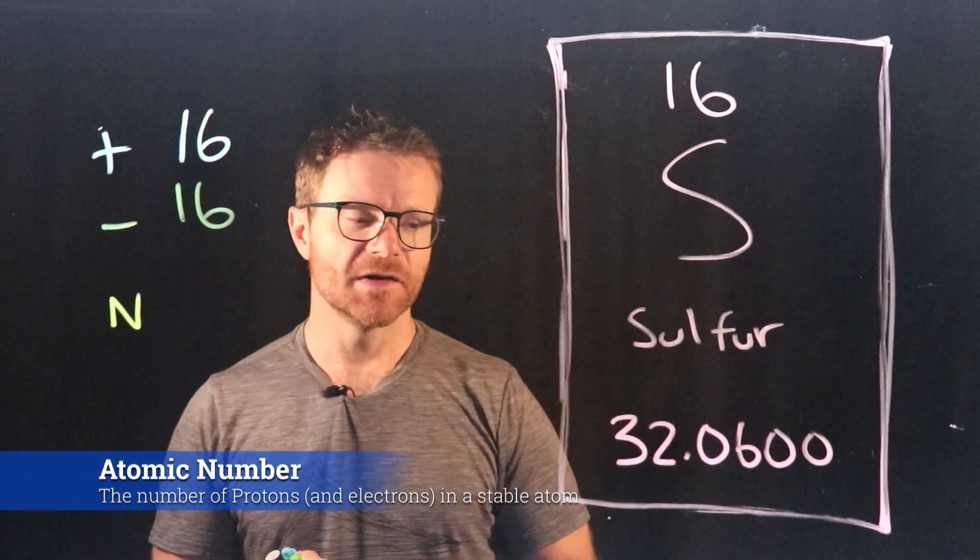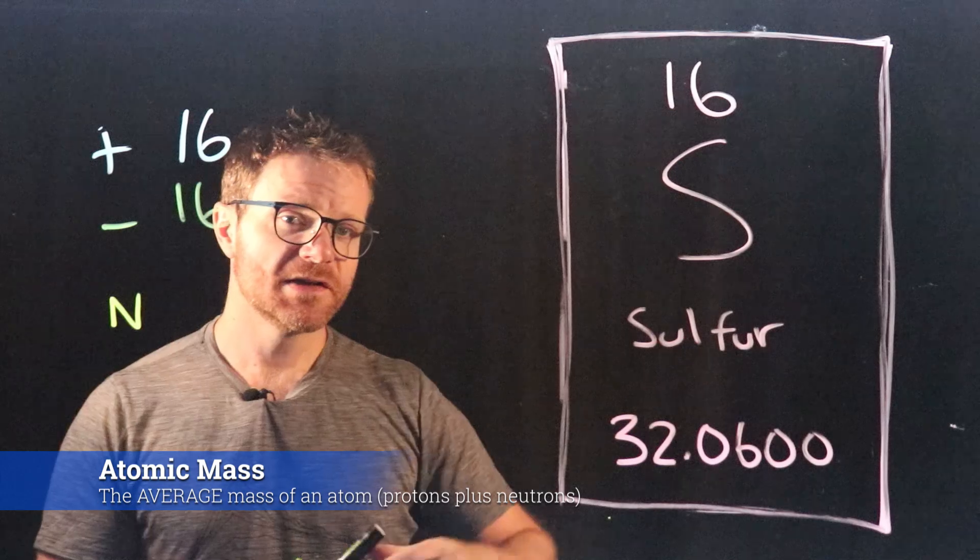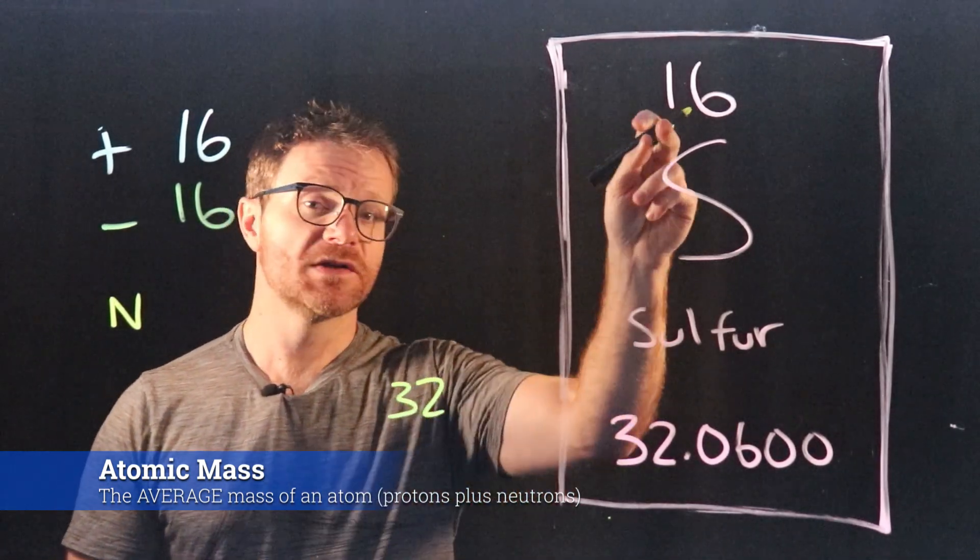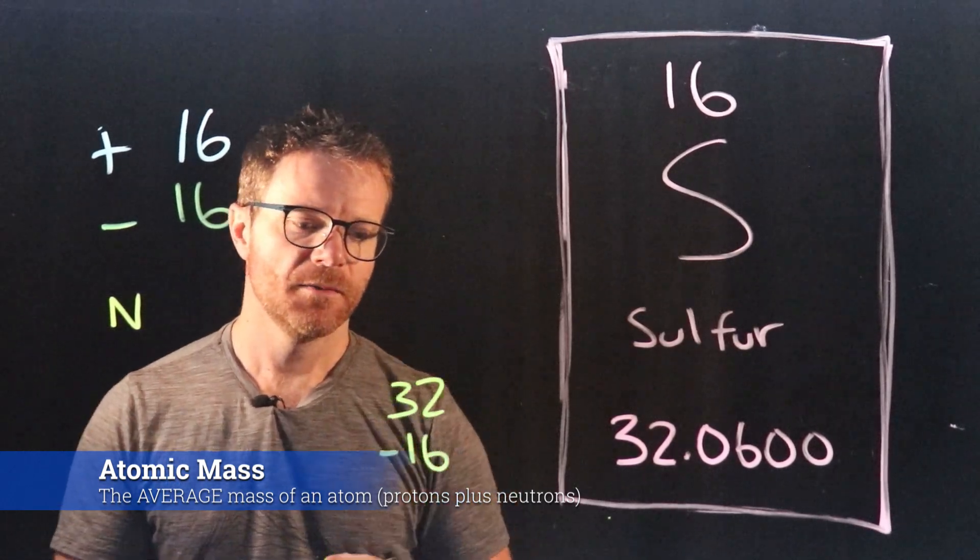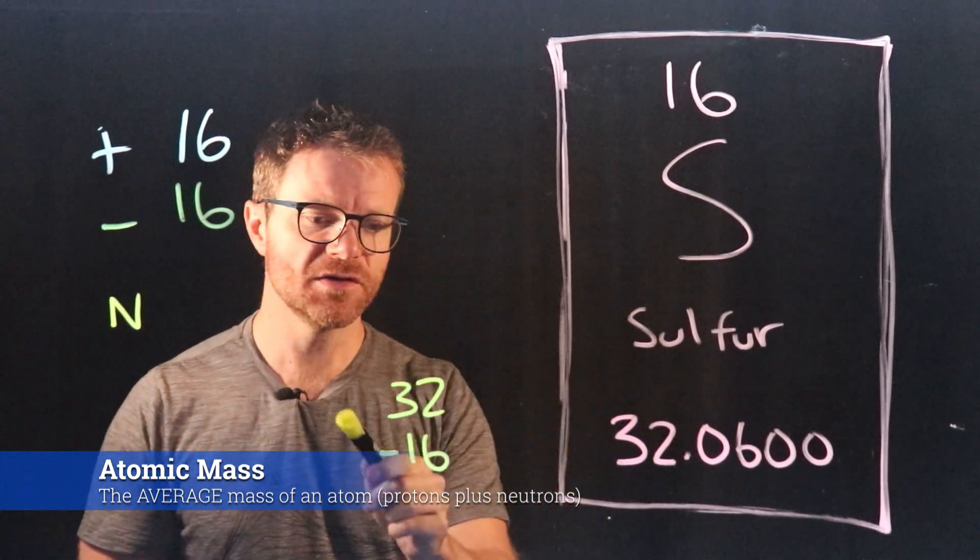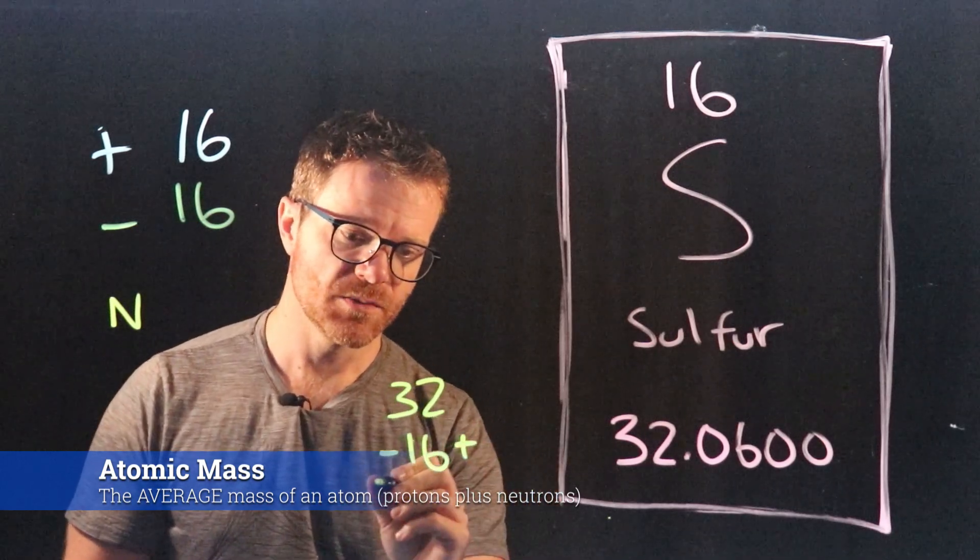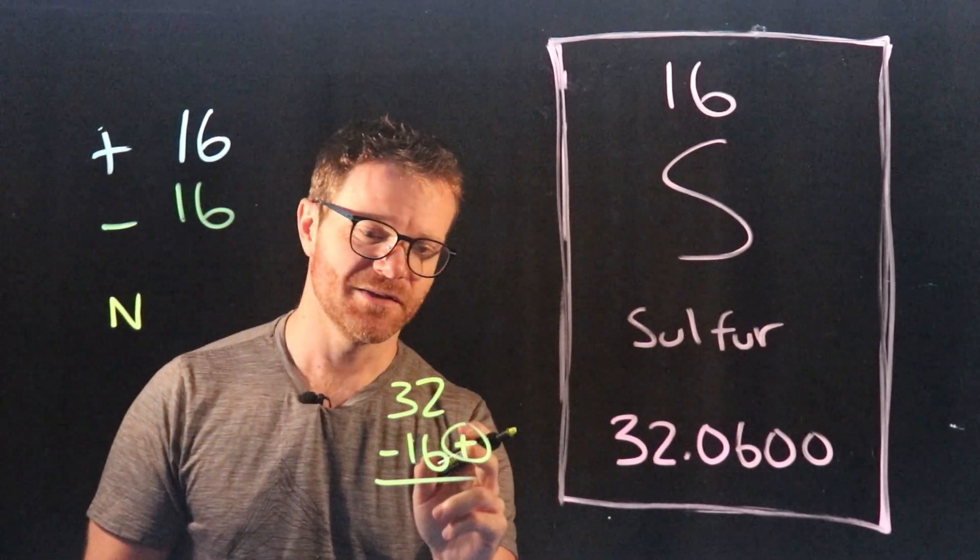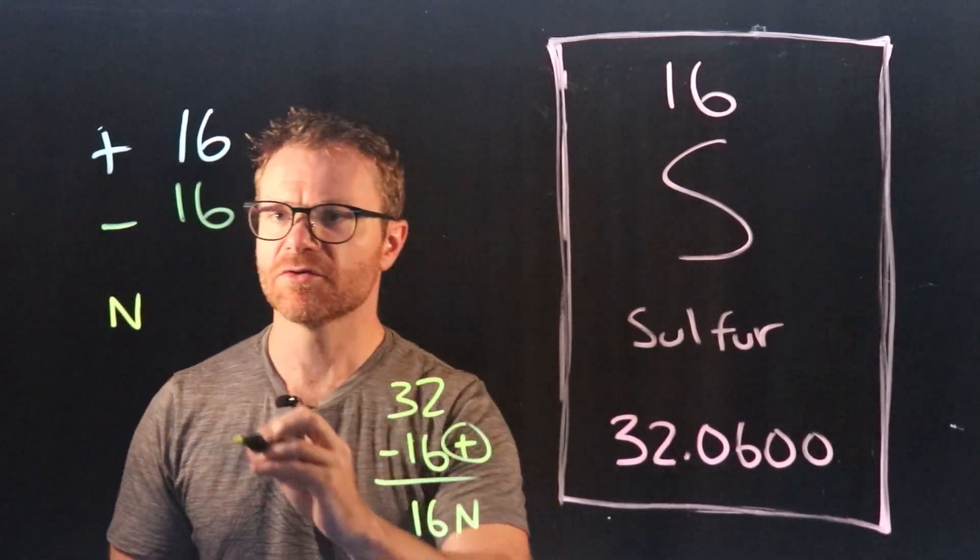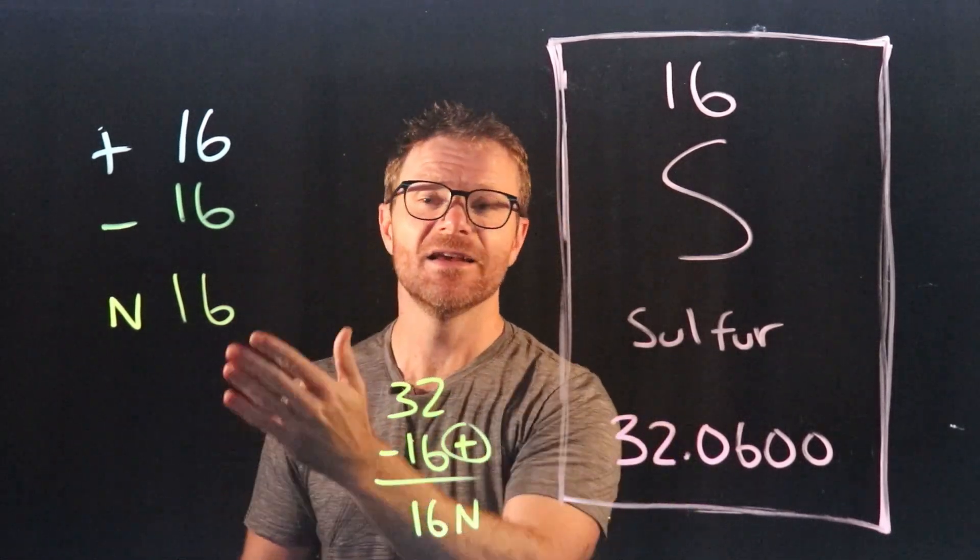Finally, to get the number of neutrons, we take the atomic mass, that's the one with a bunch of decimal places, and we round it to the nearest whole number. In that case that number is 32. Then we subtract the number of protons, because atomic mass is the number of protons and neutrons in the nucleus. So if there's 32 protons and neutrons, and there's 16 protons, we subtract those away. Then we're left with 16 neutrons. So 16. So the answer to this problem is 16, 16, and 16.